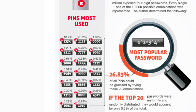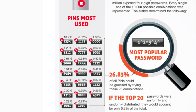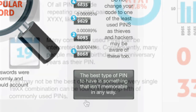I'm telling you this because I want you to double-check and make sure you're not using one of these PINs. The most popular PIN — used by more than 10 percent of people in this survey — was 1234. You can see right down the line: 1111, 0000, 1212, 7777, all the way down to 1010. It's very important you don't use any of these combinations. The best type of PIN is something that isn't memorable in any particular way. If you are using one of these top 20 PINs, it is highly advisable that you stop and select another one right away.